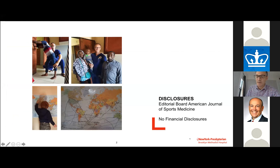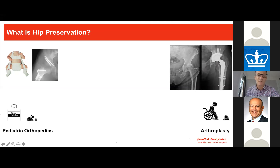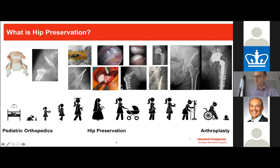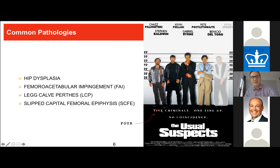I don't have any disclosures pertinent to this presentation. Hip preservation creates a bridge between pediatric orthopedic surgeons and arthroplasty surgeons, covering the entire spectrum of hip pathology. Our treatments can range from observation, bracing, casting, arthroscopy, and various osteotomies all the way to total hip replacement. I'd like to discuss the four usual suspects we are often confronted with, both in primary practice and in the specialized hip preservation clinic.